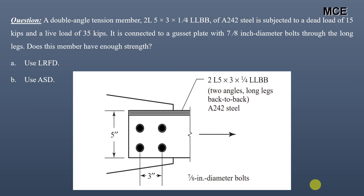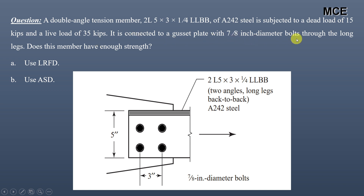Hello and welcome back to Master Civil Engineering. In this video you will learn how to find the strength of a double angle tension member when it is subjected to dead and live loads. The question involves a 2L5x3x1/4 long legs back to back of A242 steel, subjected to a dead load of 15 kips and a live load of 35 kips. It is connected to a gusset plate with 7/8 inch diameter bolts through the long legs. We have to check whether this member has enough strength according to the LRFD and the ASD.